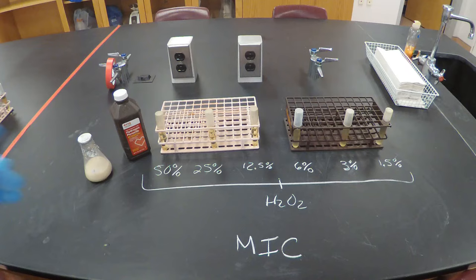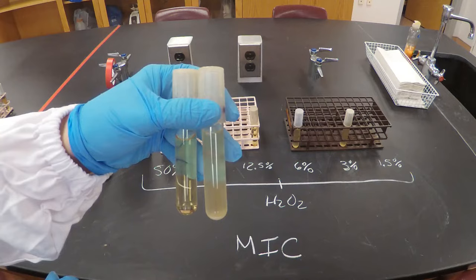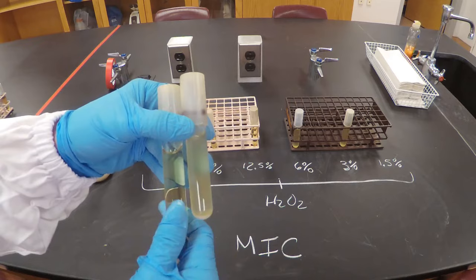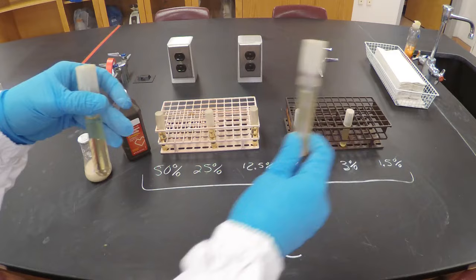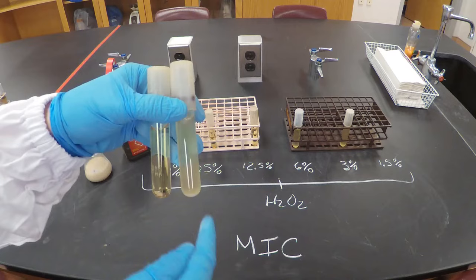Now, how do you know if a bacterium was able to grow? If it looks cloudy like this tube here, it means the bacteria were able to grow. If it looks clear, like this tube here — this is my negative control, the tube I didn't add any bacteria to — that means no growth. So cloudy means growth, and clear means no growth.